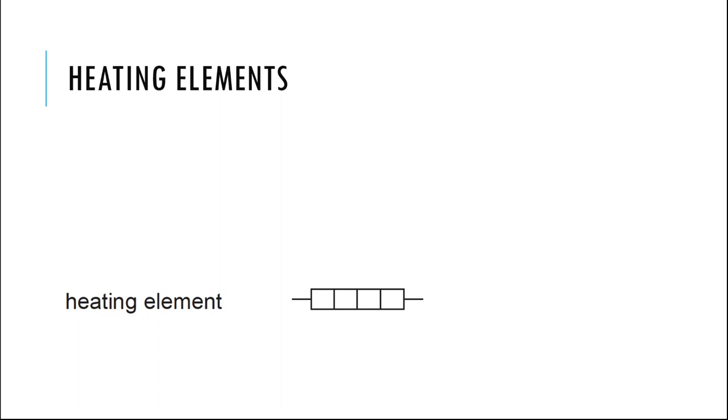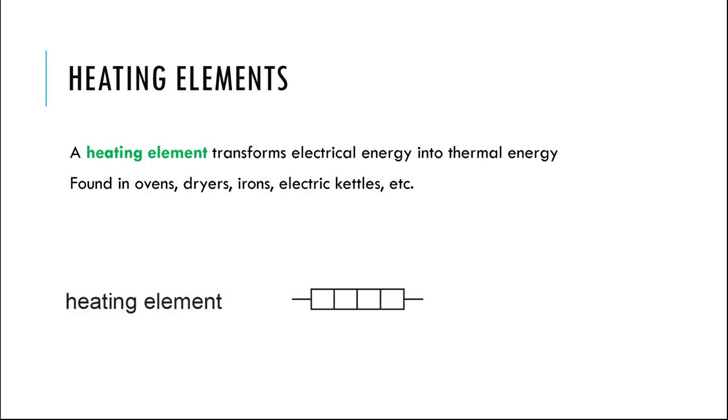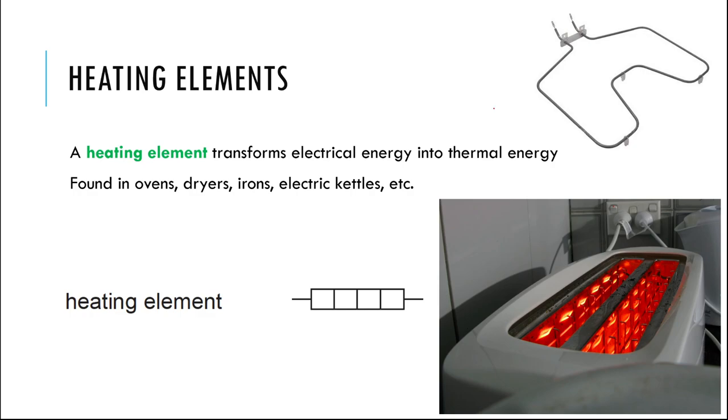One other type is called the heating element. A heating element, like all resistors, transforms electrical energy into thermal energy. This is a resistor that's used to maximize that effect and use it for a purpose. The place that you'll see these is in your kitchen, all kinds of appliances. Anytime you see like a coil that heats up and gets red hot when current runs through it, that's a heating element. A toaster. These are all heating elements.